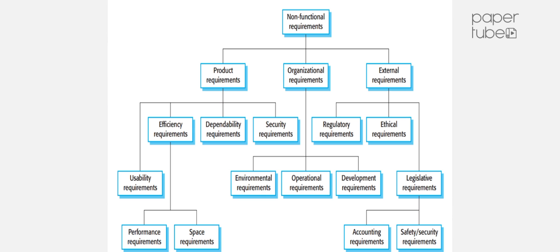Product requirements specify that the delivered product must have particular attributes such as execution speed, reliability, usability, efficiency, dependability, and security. These are the product industry requirements.